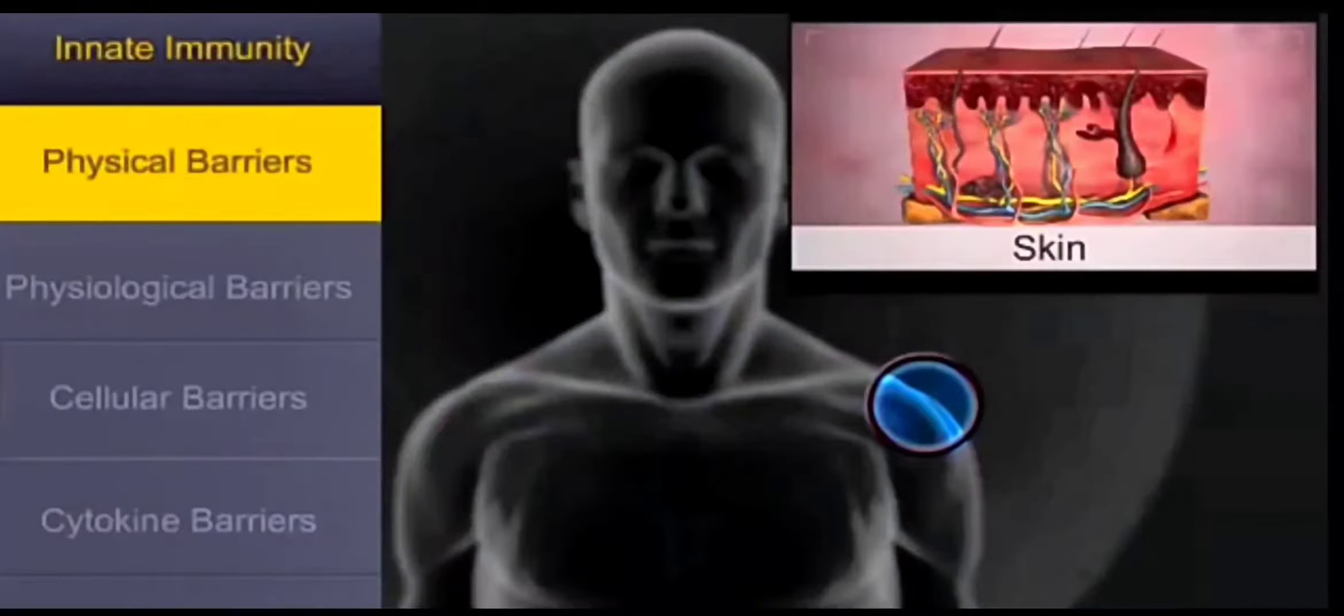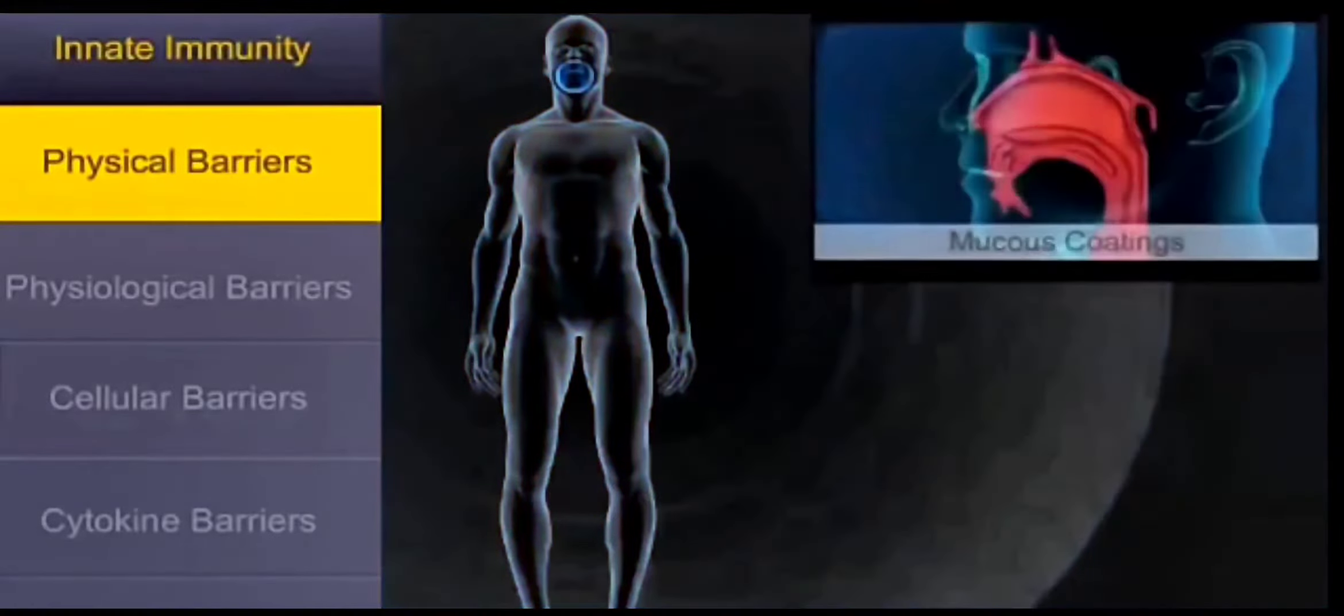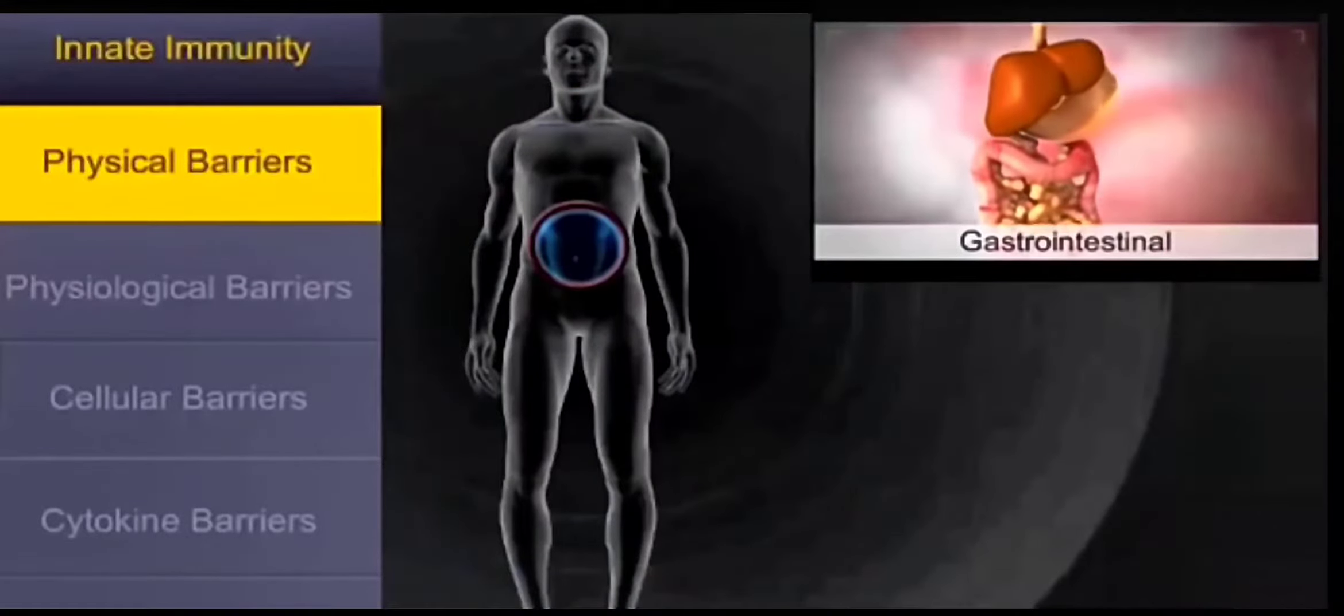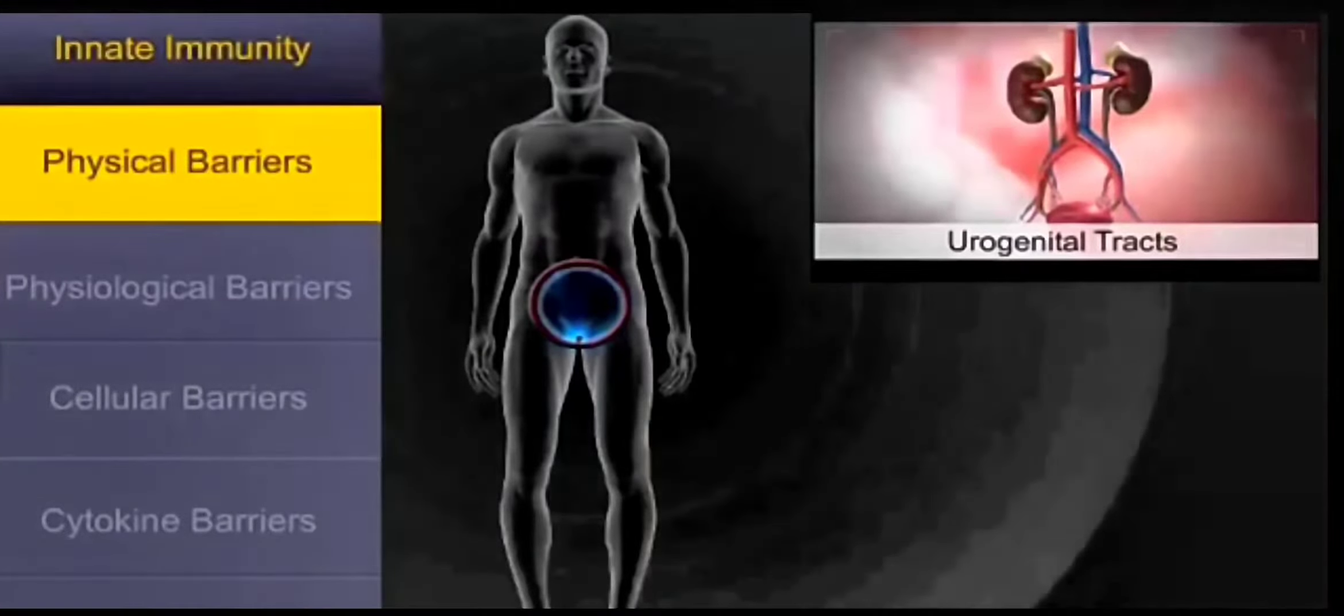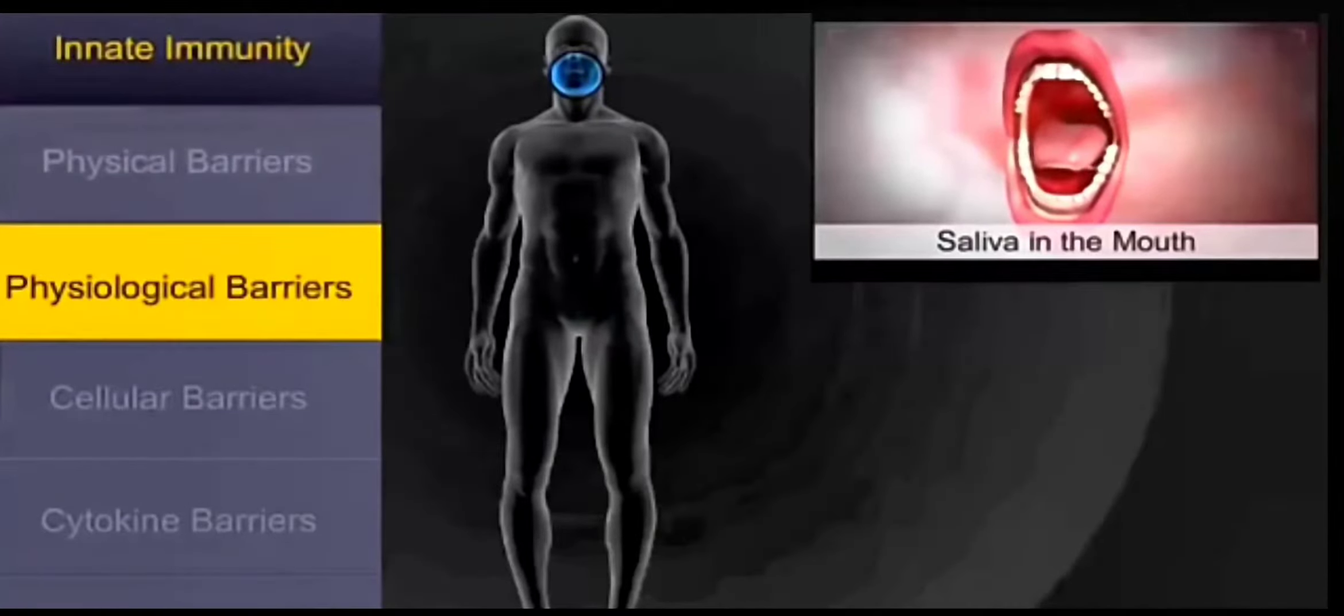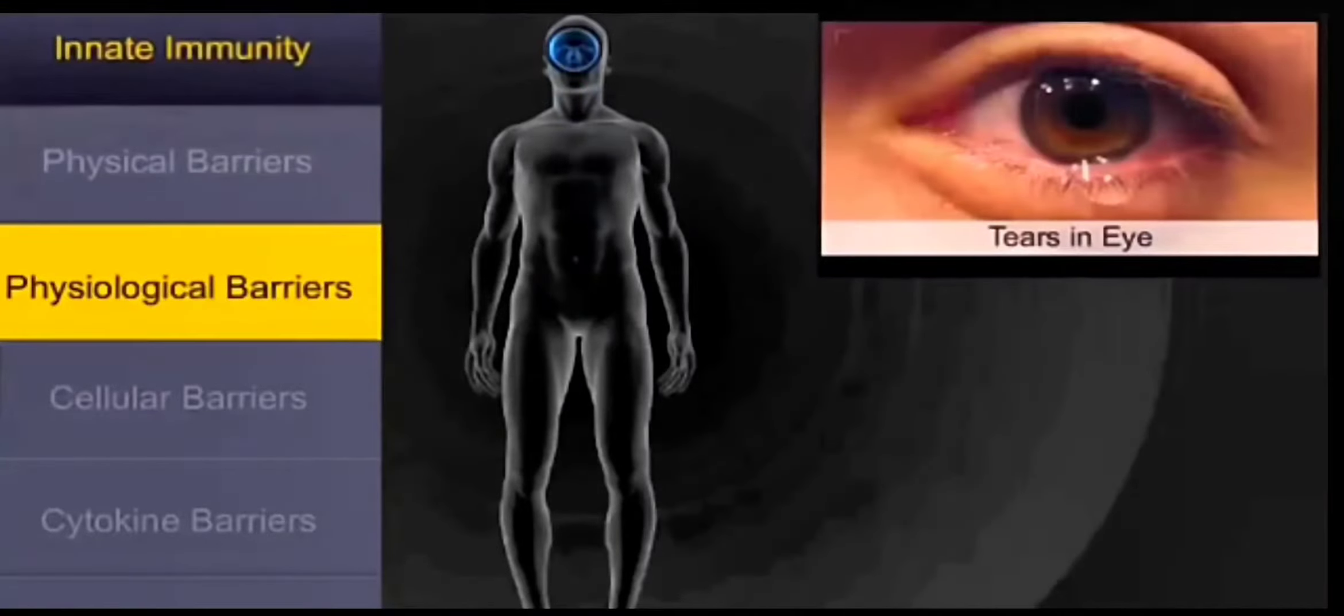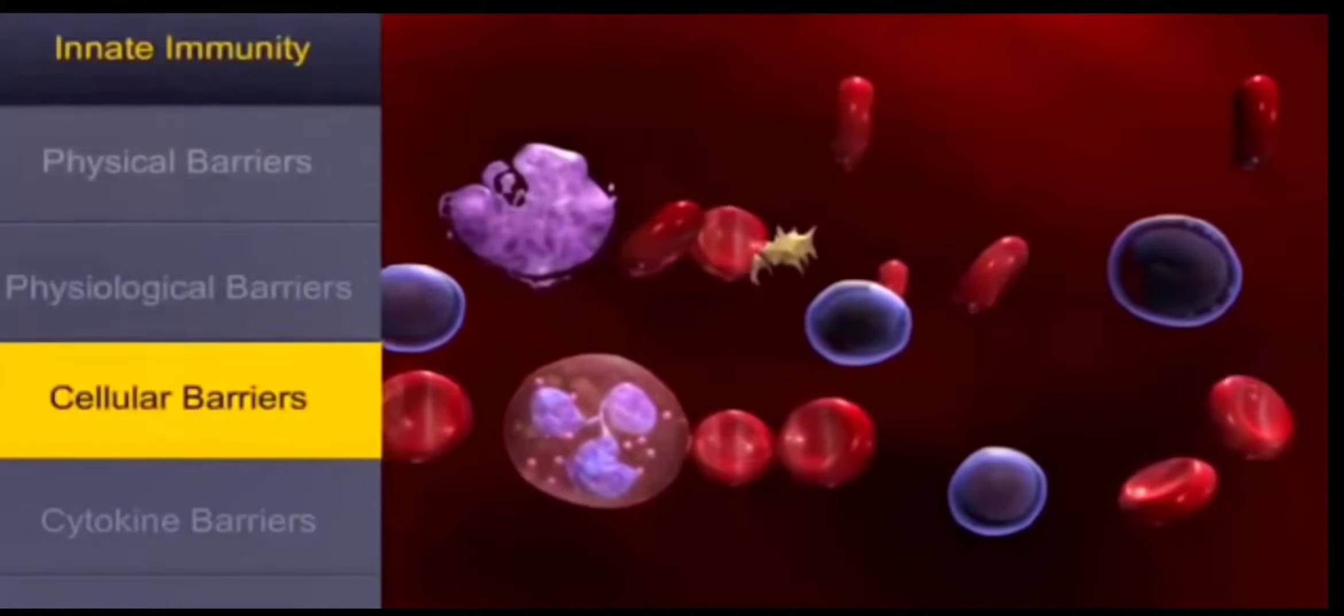First are the physical barriers. Our skin is the most important barrier which protects us from entry of pathogens. Then comes the mucus coating which may be present in our mouth, gastrointestinal system, or urogenital tract. Next come the physiological barriers. There are certain chemicals which may be present in our saliva, gastric juices, and even in the tears in our eyes which help us in protecting from microbes.